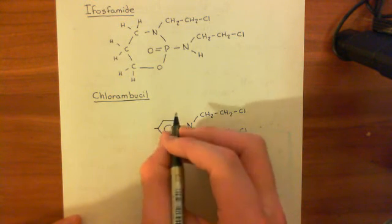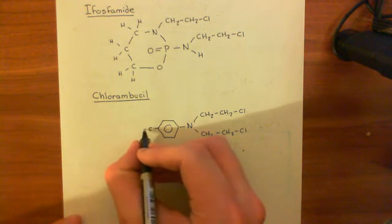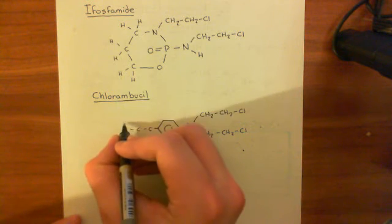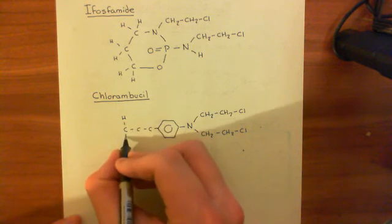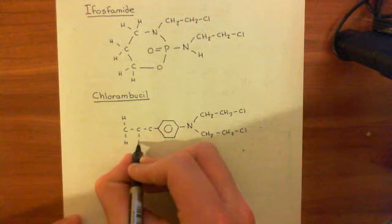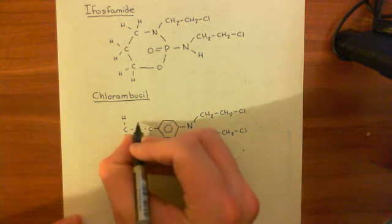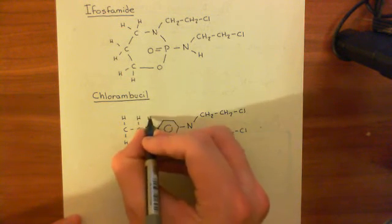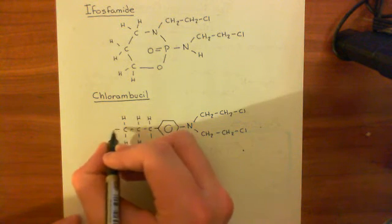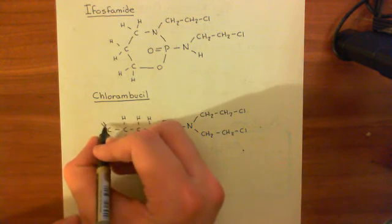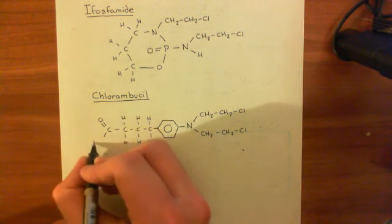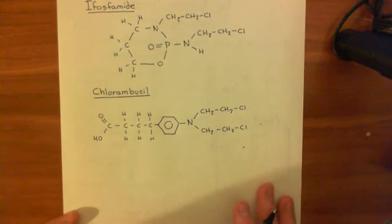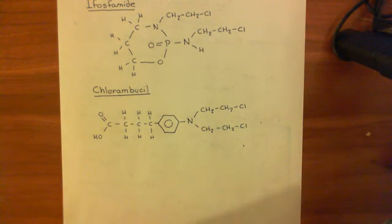But this time what you have is three methylene groups — one, two, three — and each of these methylene groups has hydrogens off it. And then finally, right at the end, you have a carboxylic acid group. So this is the drug chlorambucil.